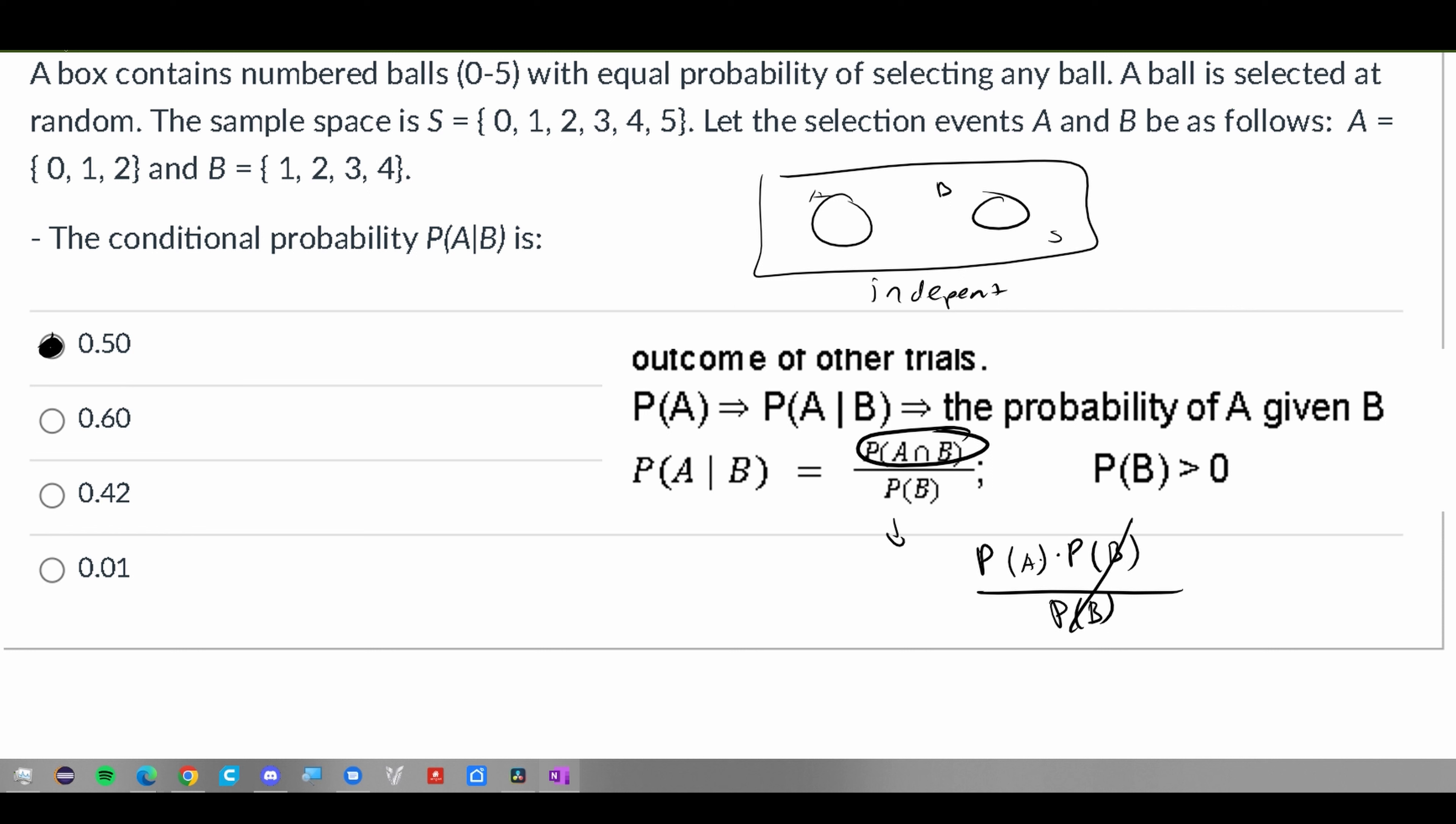So the probability of A is just going to be 3 divided by our entire sample space, which is 6, which gives us one half. So 0.5 is the correct answer.